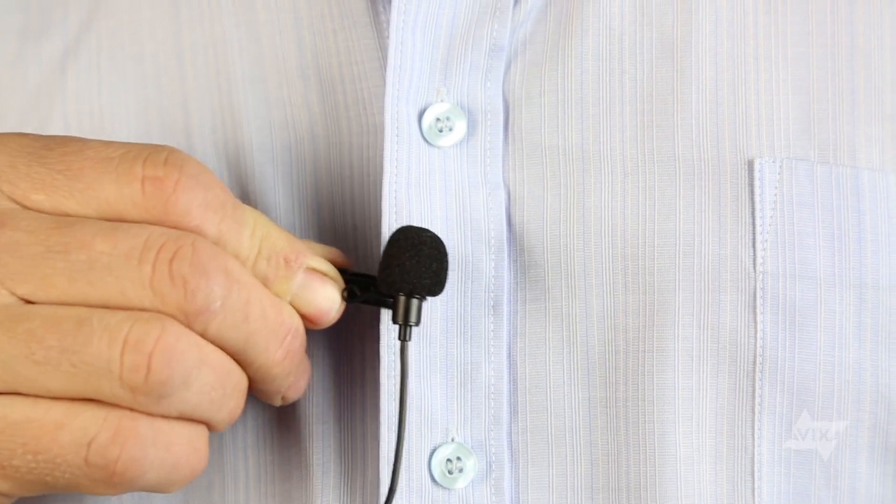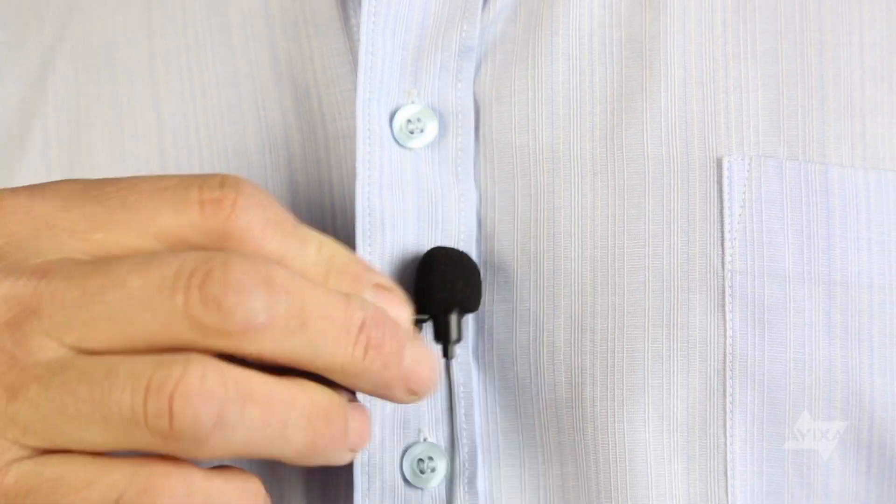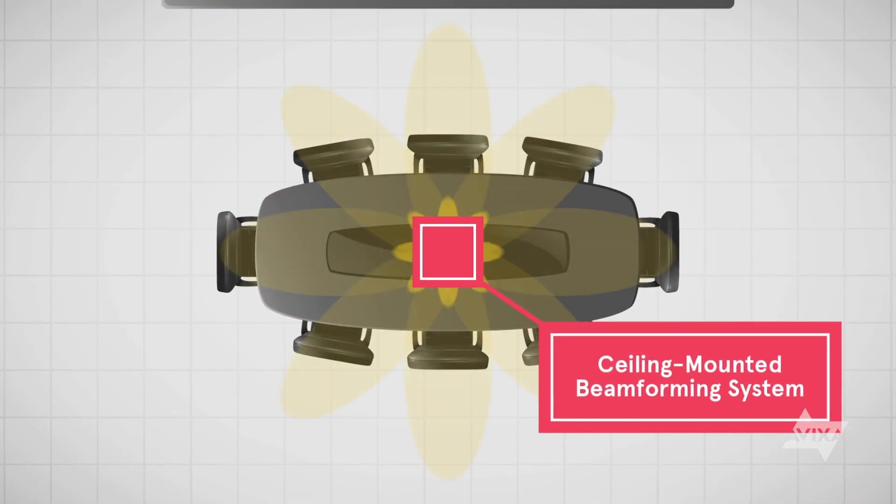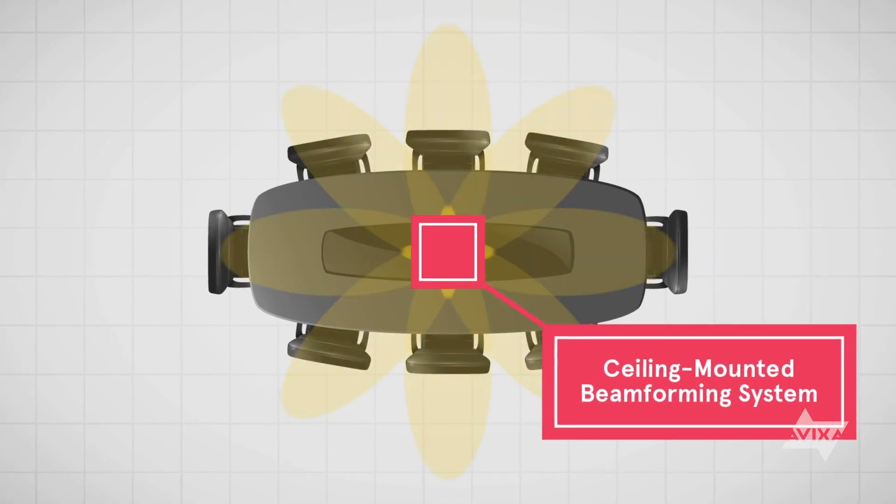A lavalier, also called a lav or lapel, is attached directly to clothing such as a necktie or lapel. A head microphone is attached to a small thin boom and fitted around the ear. Since size, appearance, and color matter for these microphones, lavaliers and head mics are most often an electret microphone. Often worn by a presenter, they are commonly used in television and theater productions. Beam forming arrays, another type of phase array microphone, have multiple microphone elements, usually condenser microphone capsules.